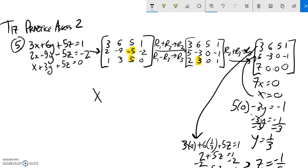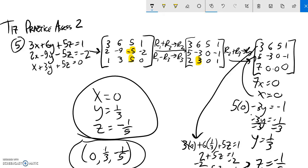So I can write my answer this way. Real explicitly, x is 0, y is 1 third, z is negative 1 fifth. Or I could write it as the ordered triplet x, y, z. This and this are both good answers.